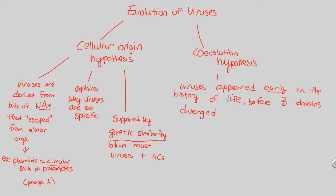The viruses evolved with the domains diverging themselves, or before that actually happened. This gives us a good, broad overview of how viruses may have come about, either through a cellular origin hypothesis or a co-evolution hypothesis.